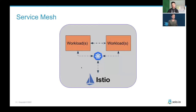Before we jump into multi-cluster service mesh, let's quickly take a look back at single-cluster service mesh. In this very simple single-cluster example, we have a couple of different workloads running in cluster, as well as our service mesh — in this case, Istio. All of the workloads, including the Istio control plane, are communicating directly with the Kubernetes API server. The control plane communicates with the API server to get endpoint information for all of the workloads, as well as service info and other metadata about the cluster.